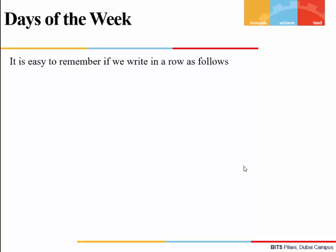To remember the month codes, write the first letter of each month in a row. A helpful trick: take 1-4-4 (12 squared), then 0-2-5 (based on 5 squared), then 0-3-6 (based on 6 squared), and add 2 to the first three digits. Dividing the months into four quarters of three makes the codes easier to recall.